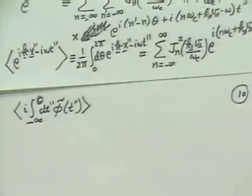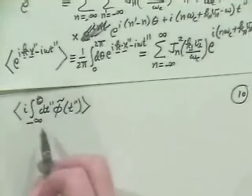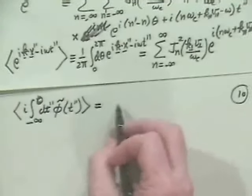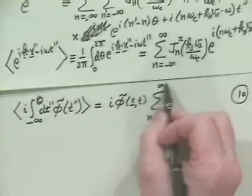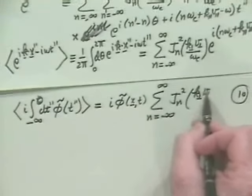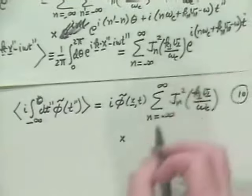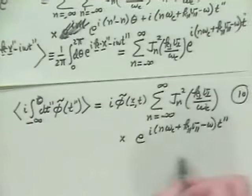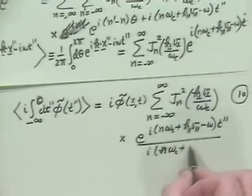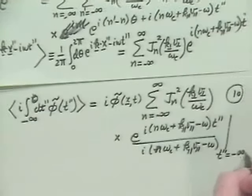Using this, you can see that if I integrate dt double prime and the phi tilde, I'll have i phi tilde of x and t, and then the sum n equals minus infinity to infinity of jn squared of k perp v perp over omega c. Now all I really have to integrate this time history integral over is this last exponential factor, and that just gives me e to the i n omega c plus k parallel v parallel minus omega times t double prime, all divided by i n omega c plus k parallel v parallel minus omega, evaluated from t double prime equals minus infinity up to zero.